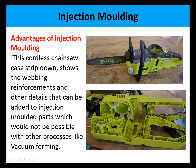The advantages of injection molding are illustrated by this stripped-down cordless chainsaw, which shows webbing reinforcements that strengthen the product and other details such as locating tabs — features that can be added to injection molded parts which would not be possible with other processes like vacuum forming.